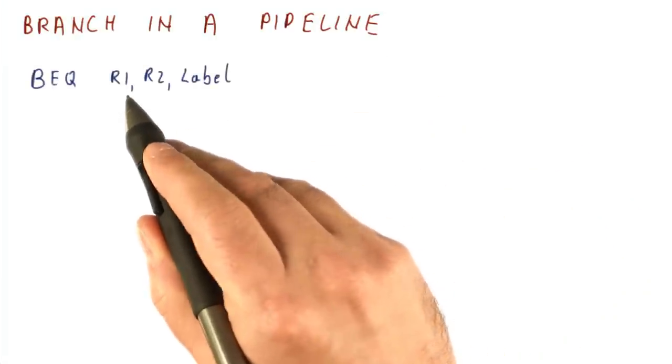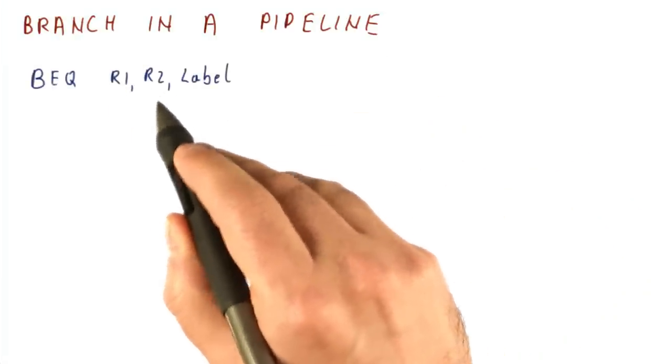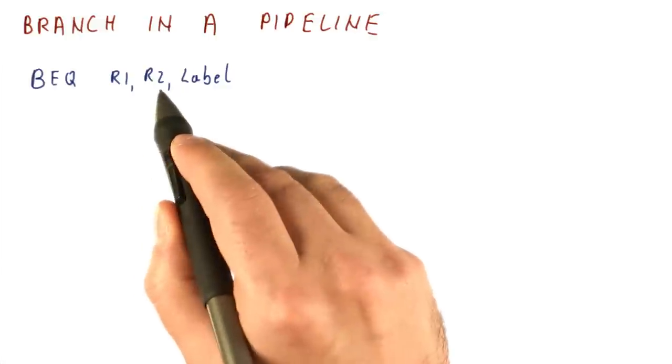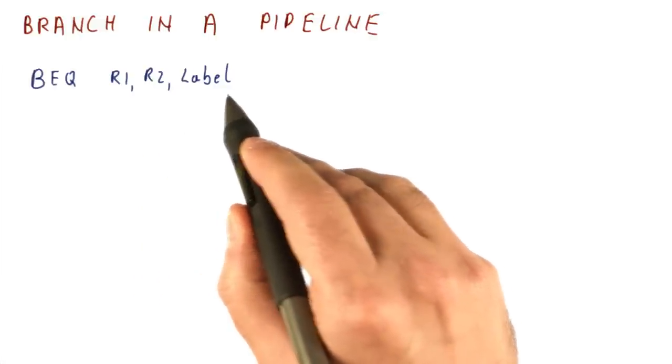A branch instruction like this will compare registers R1 and R2. And if they are equal, jump to the label.